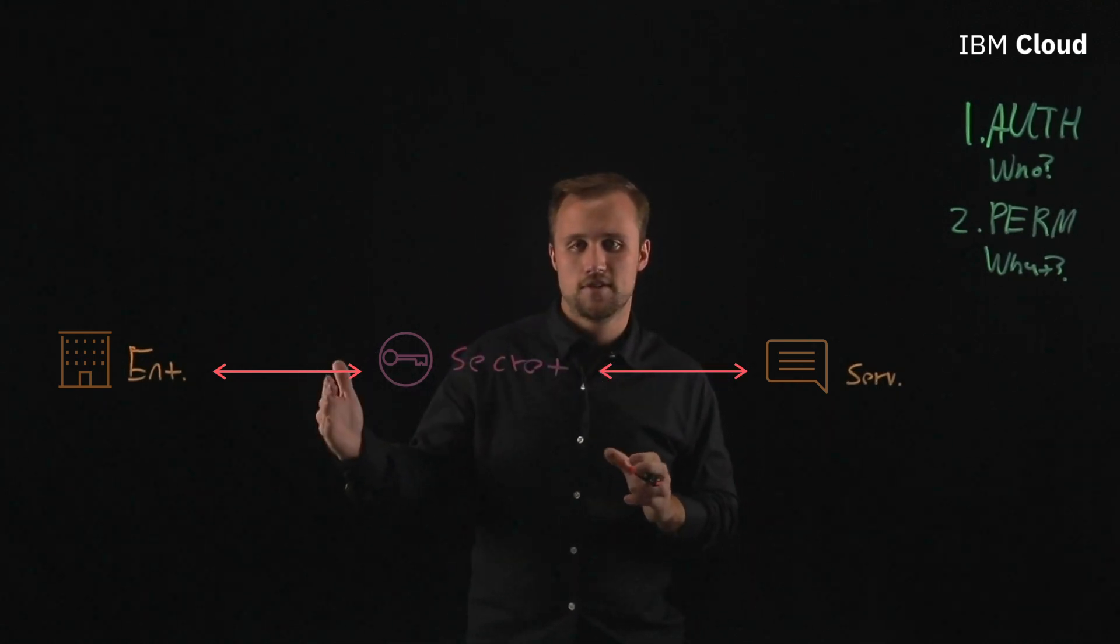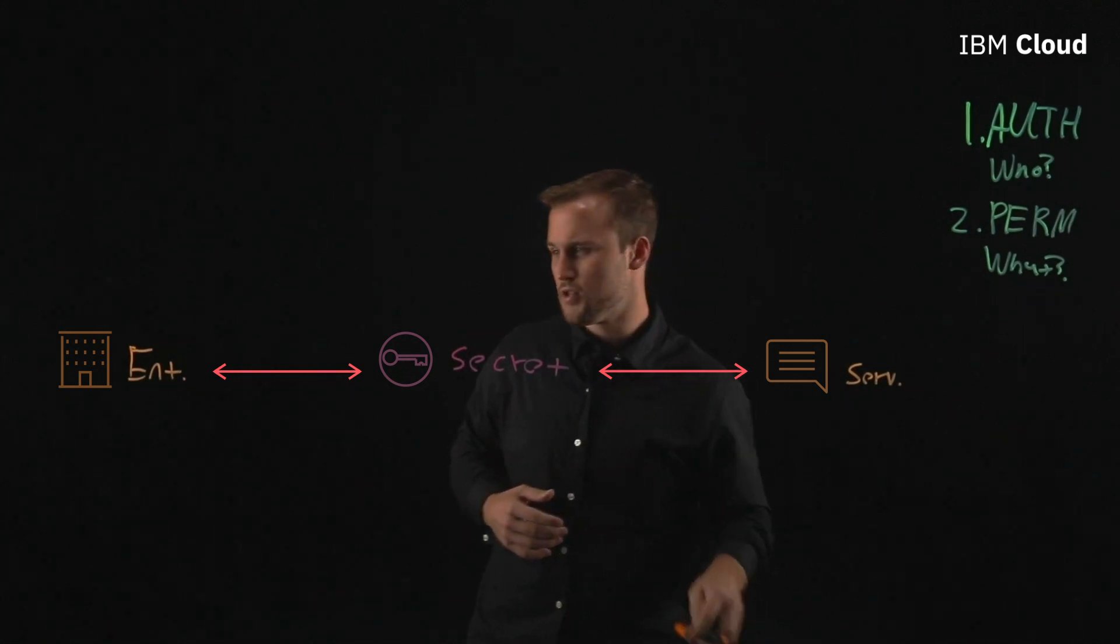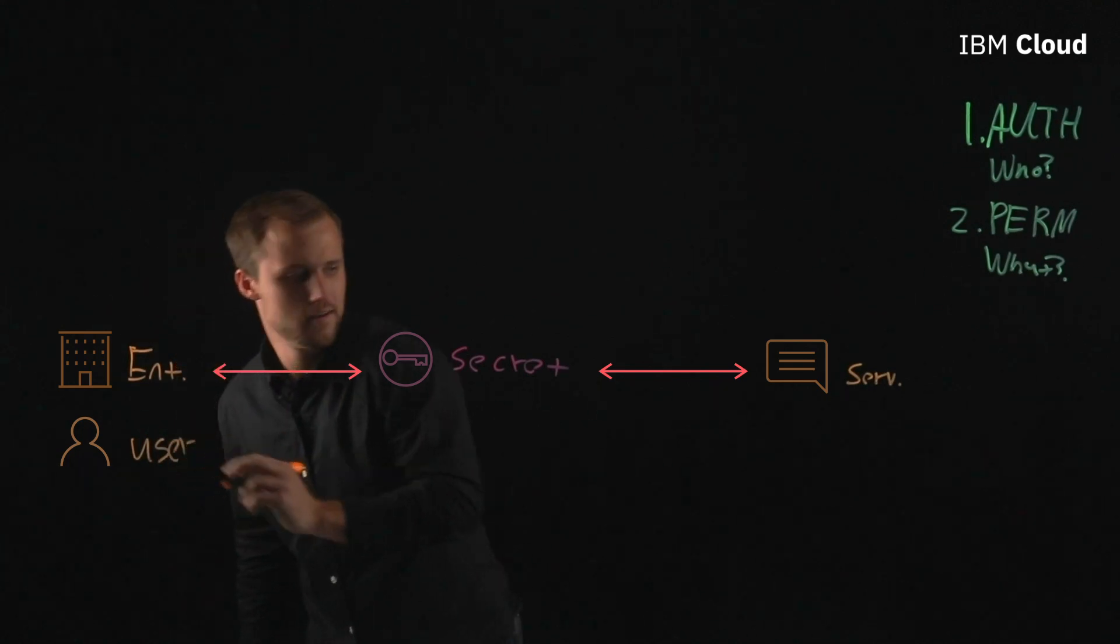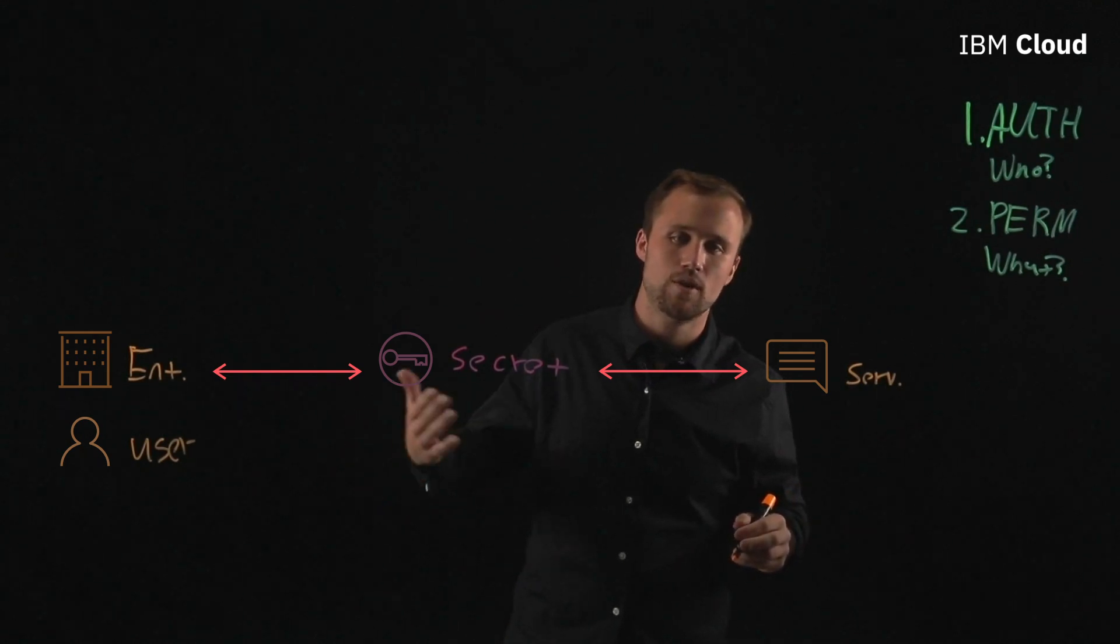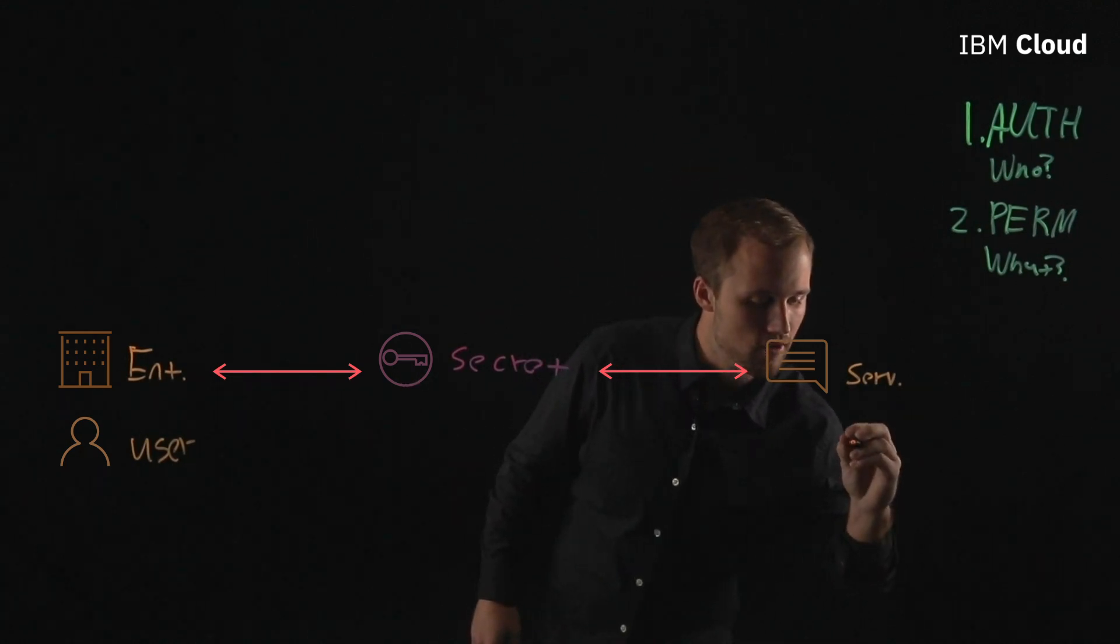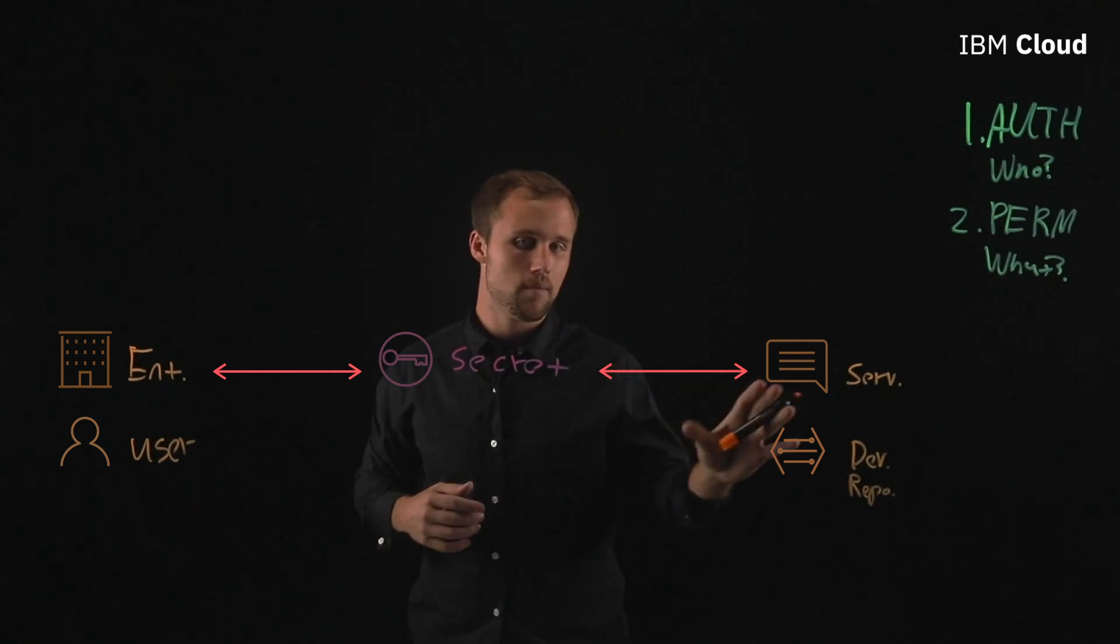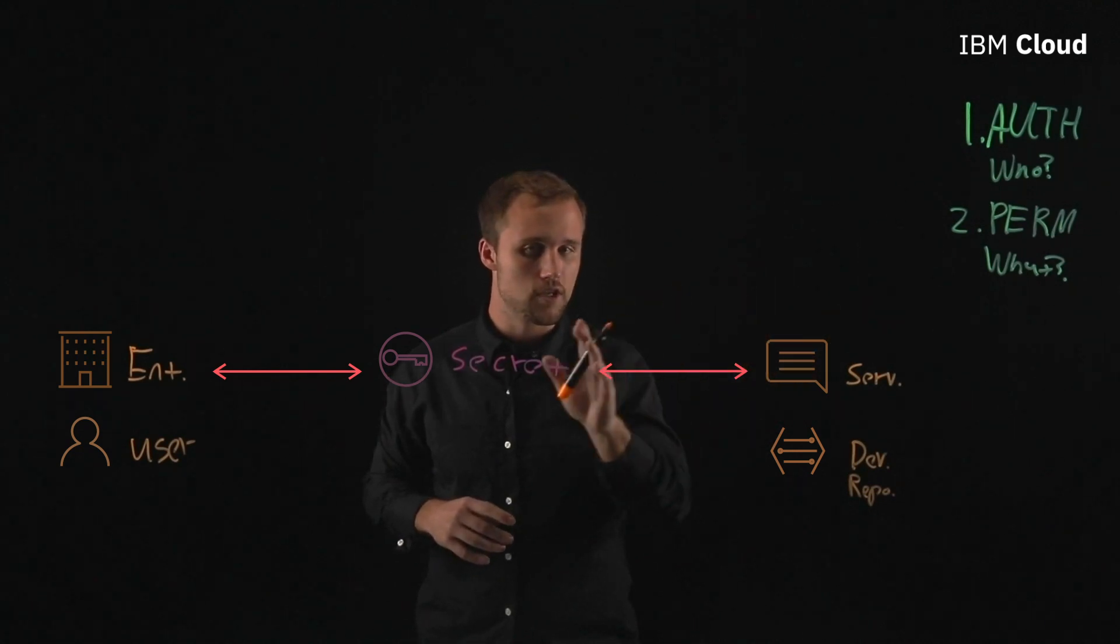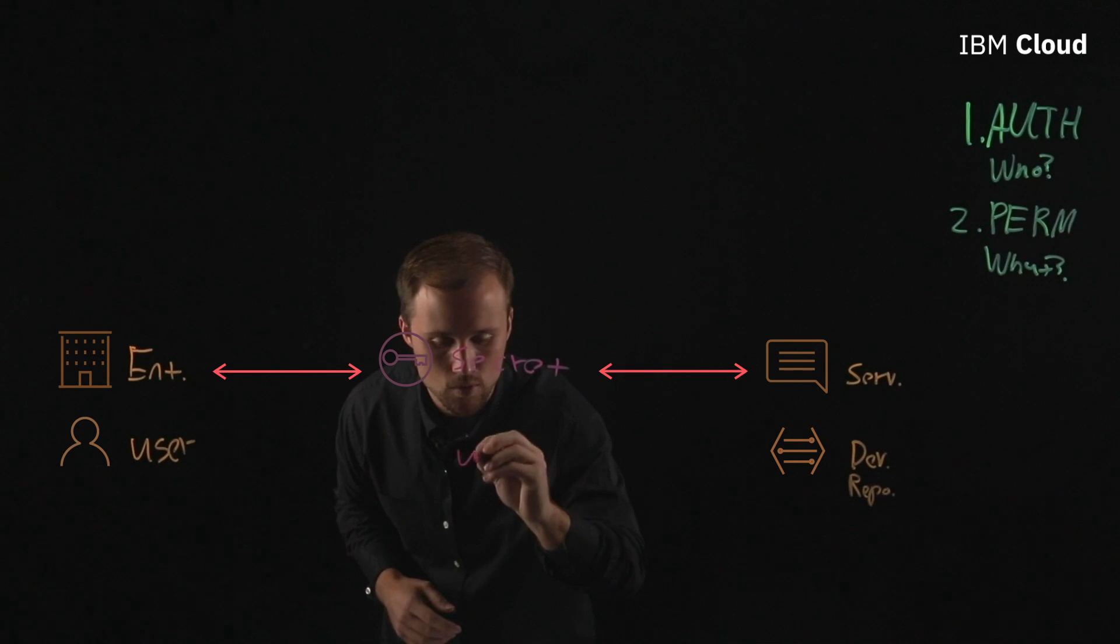So now with this dynamic established let's move into an example with users. So for users, we'll say user here is our entity and we'll say our service is a developer who needs read or write access. So they're interacting with the development repo in order to do that. So in order to gain that access again coming back to the need we have authorization and permission.